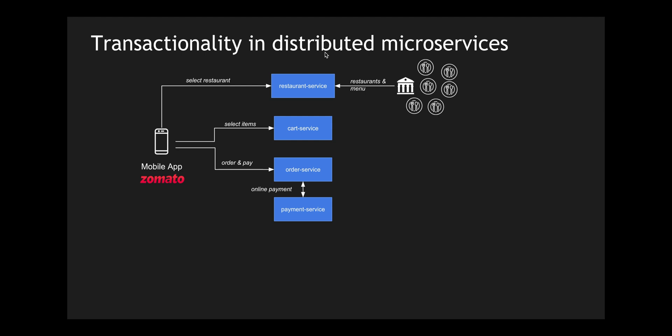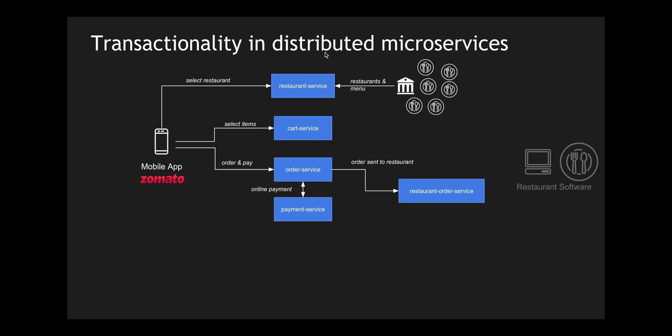Once the payment is completed, the order proceeds to the next step. The order service acts like a central orchestrator — it emits events and based on those events different microservices behave differently. Once payment is completed, an order information is sent to a restaurant order service, which maintains all the interaction between the restaurant software and the internal order system. It pushes those orders into the restaurant software maintained by the third party system.